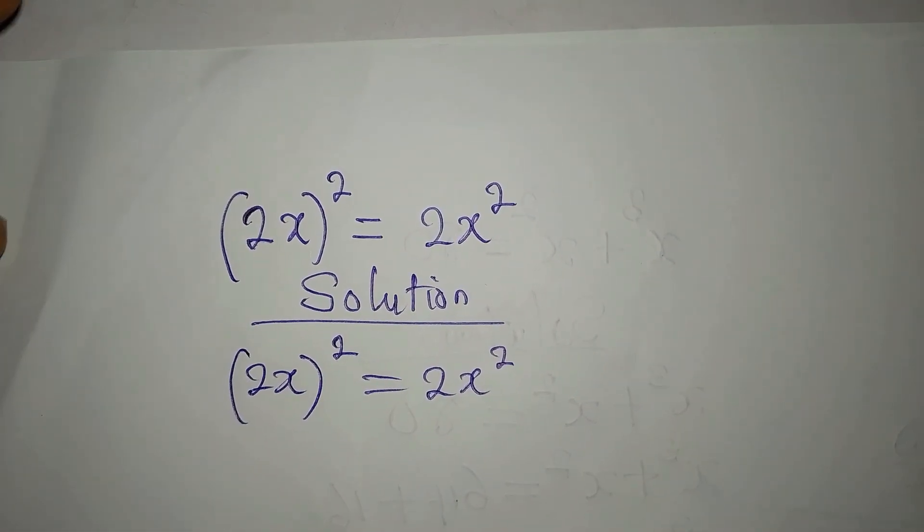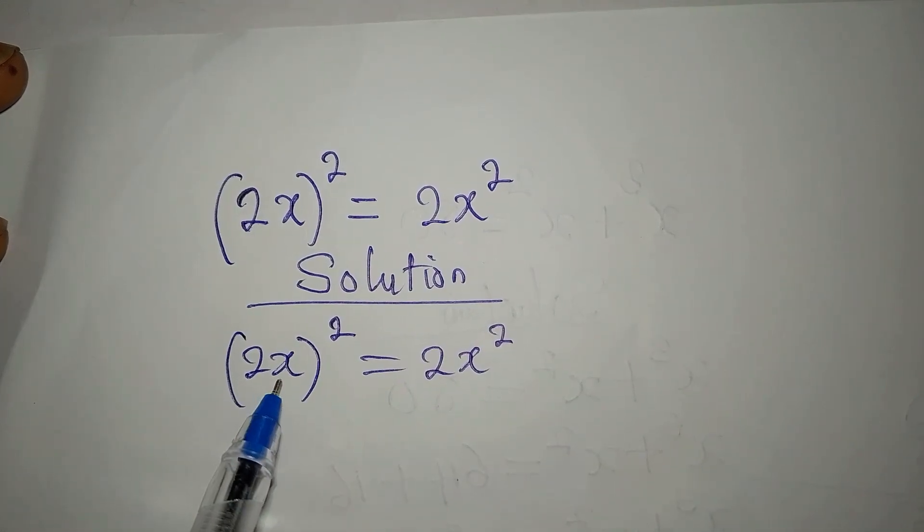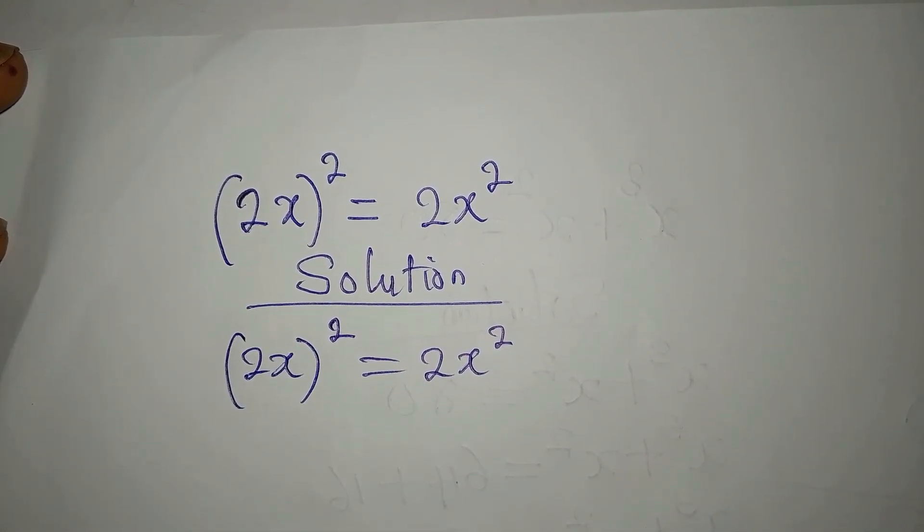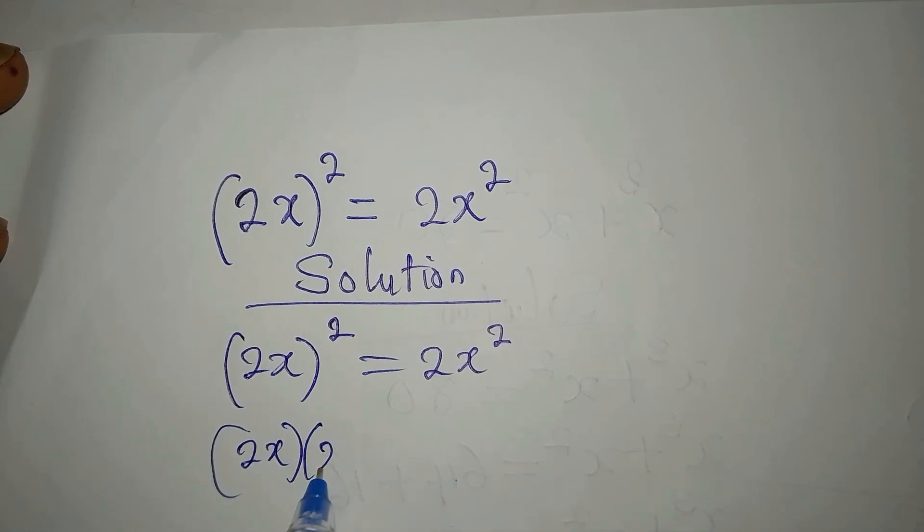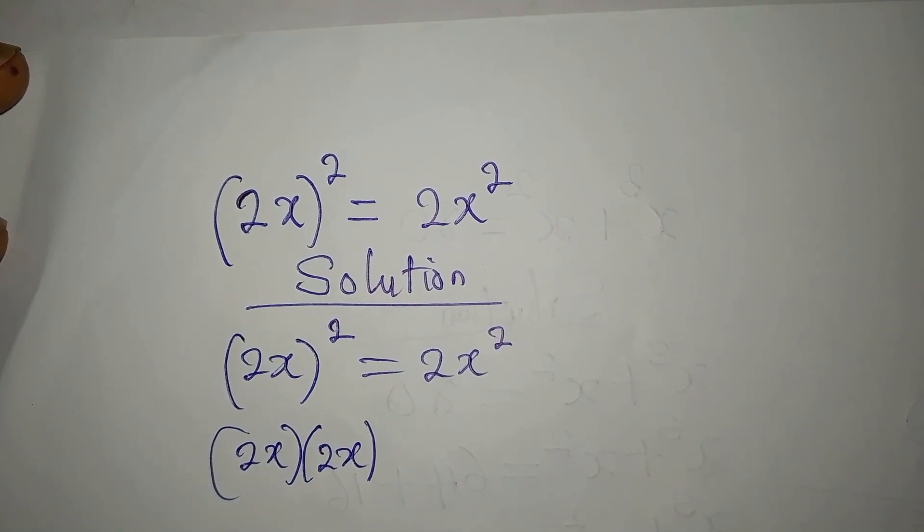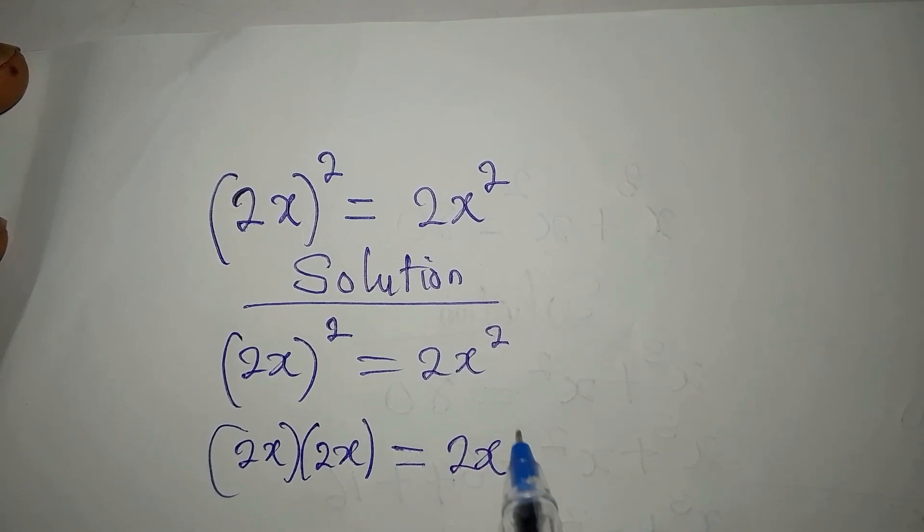But this can be solved. Let's watch the steps. This is 2x² right, so this means that we have 2x in two places, and then on the other hand we have just 2x².